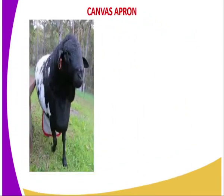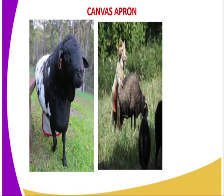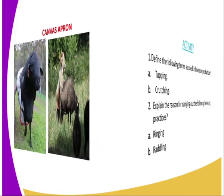We go to the canvas apron. If you want to control the tapping process, you are supposed to put a canvas apron on the lower side of the ram, so that you can control the breeding from taking place.